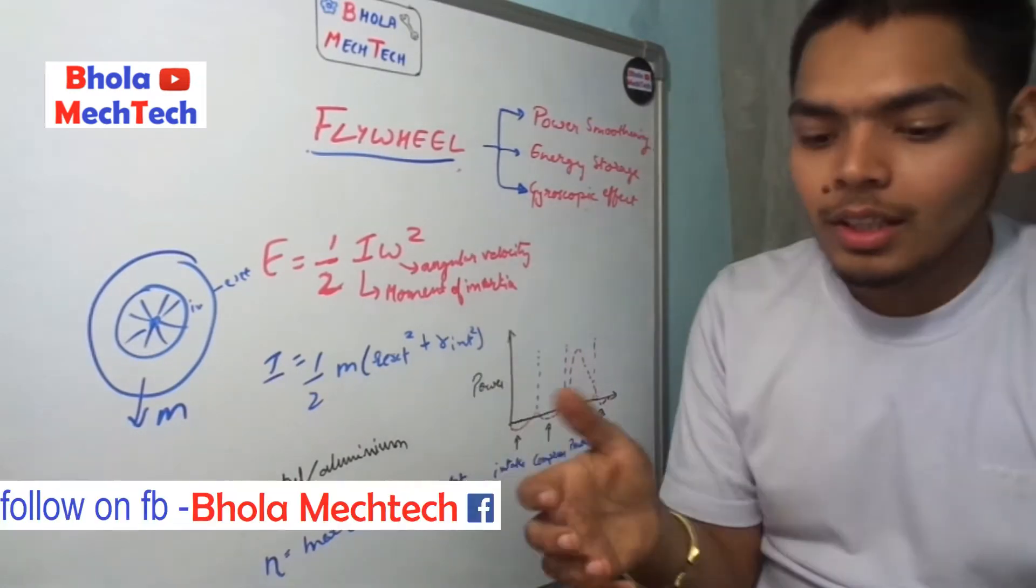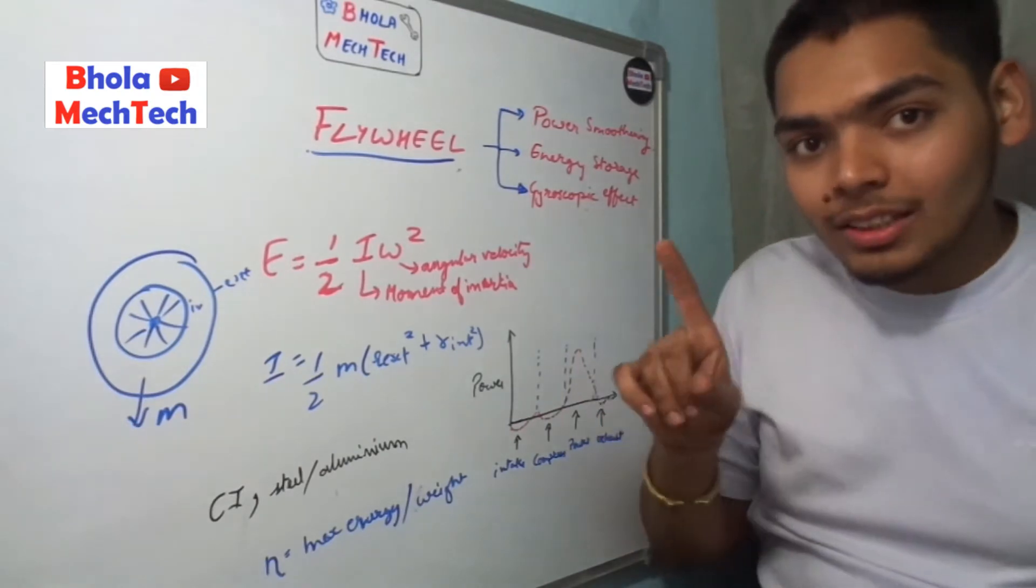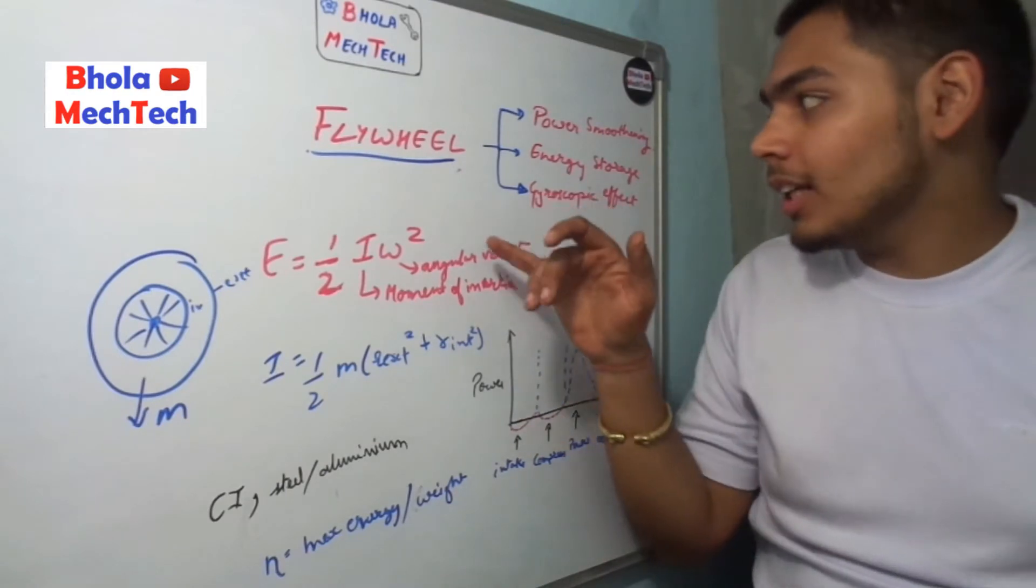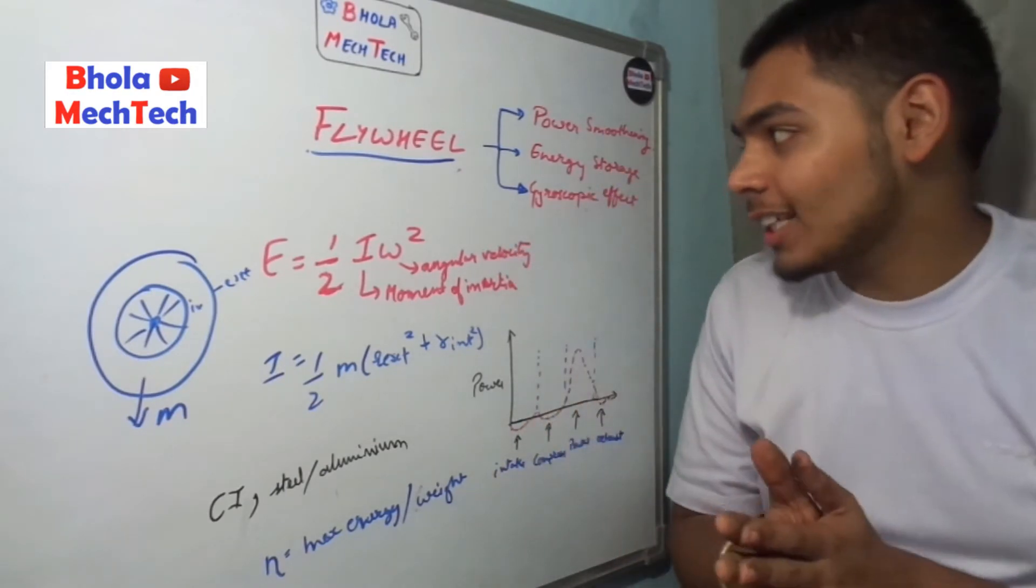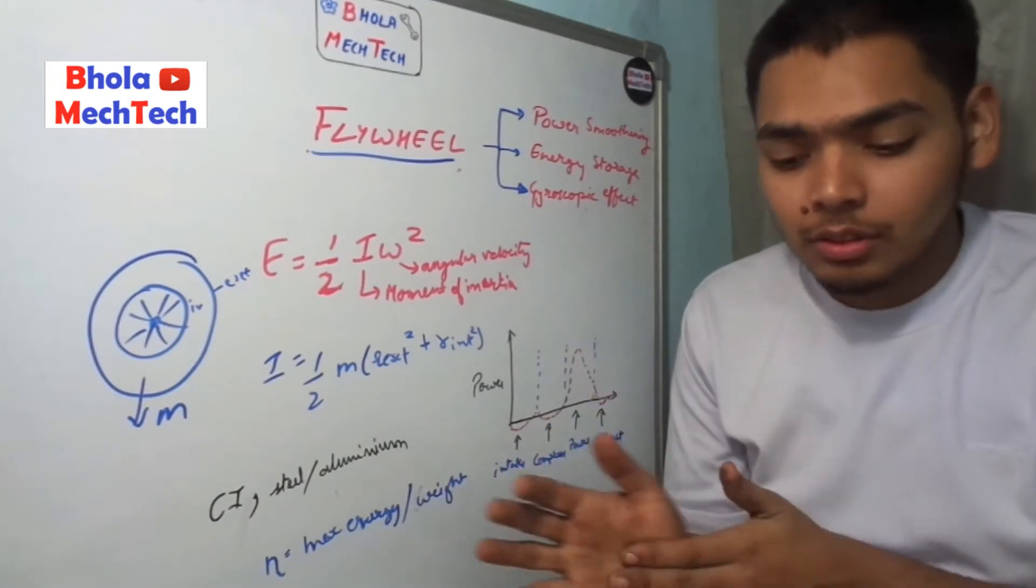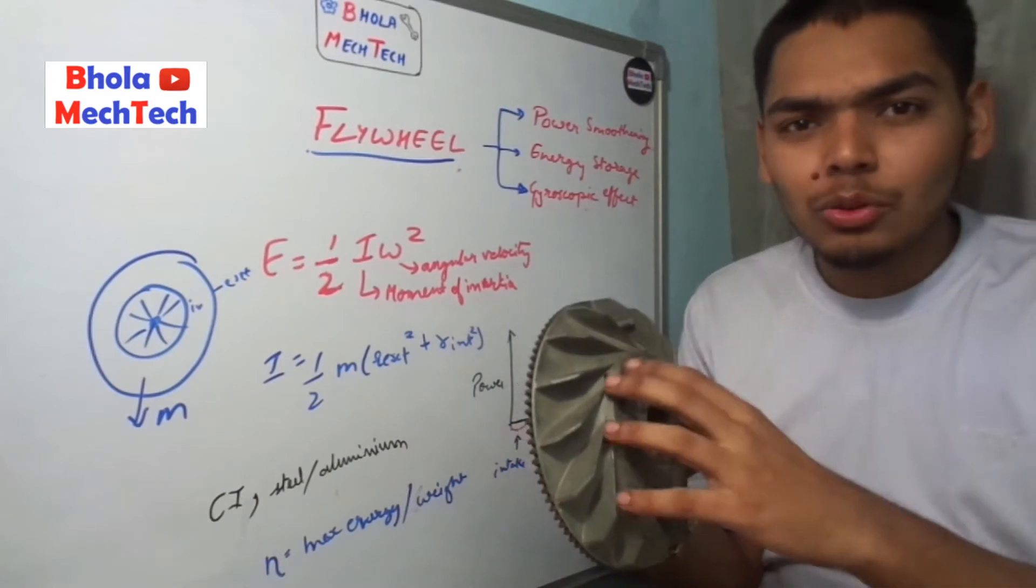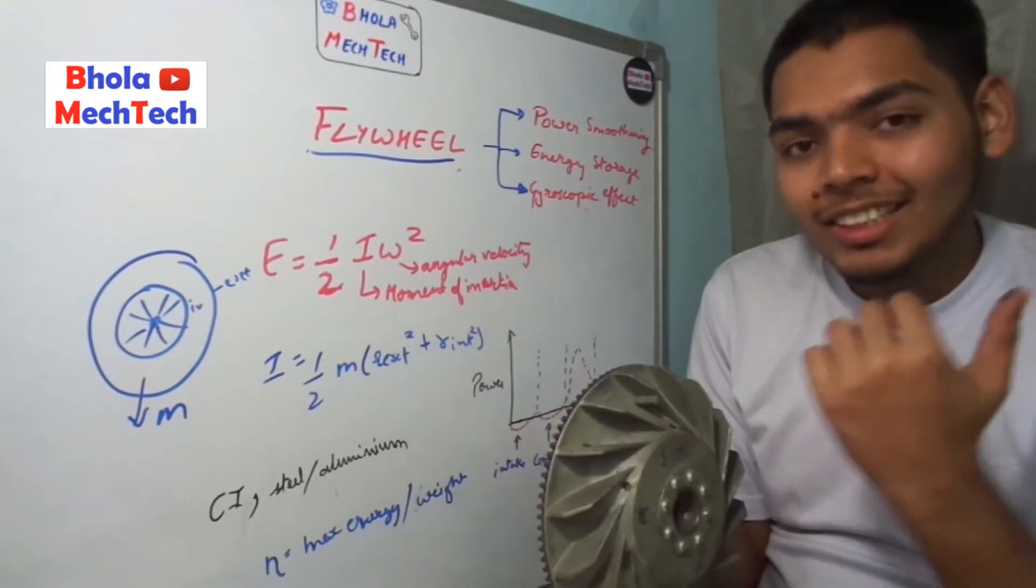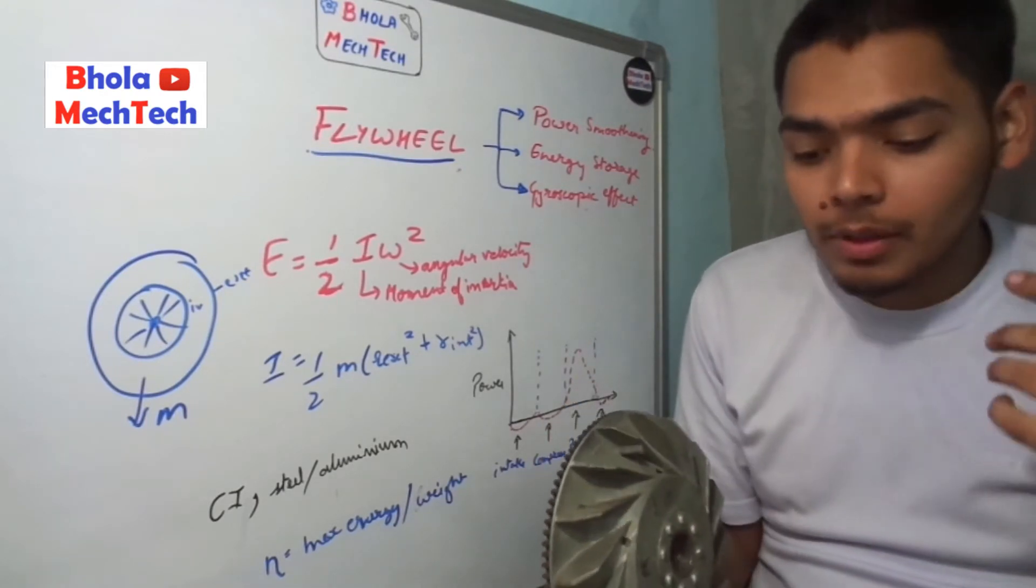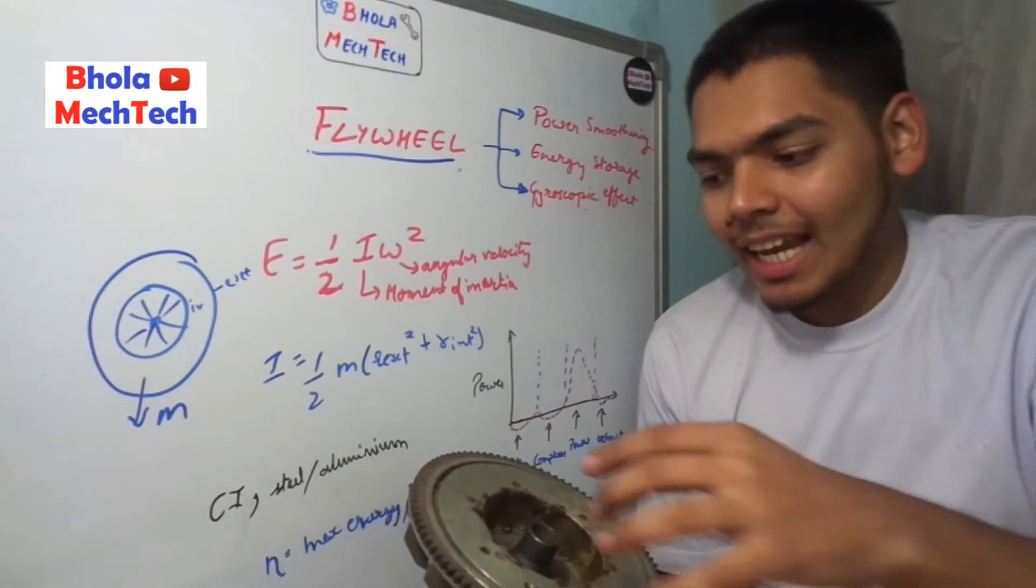In this way it stores the energy. The overall uses of the flywheel are: it is used for power smoothing because the power stroke is only once, so there will be a lot of vibration in the engine. Energy storage is also required as I already explained. Another thing is they use the gyroscopic effect of the wheel. When this is connected to something and it keeps rotating, due to the gyroscopic effect it will keep the machine in the same alignment. So it was previously used for the gyroscopic effect also.